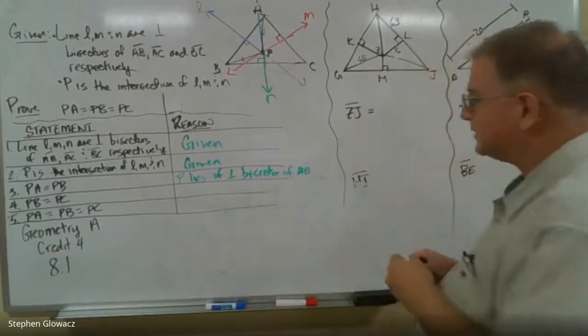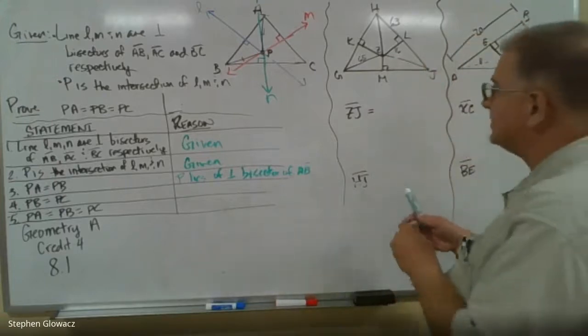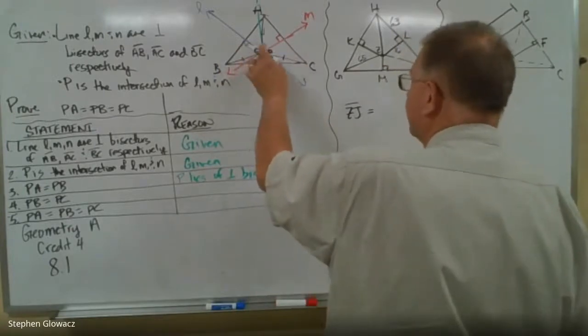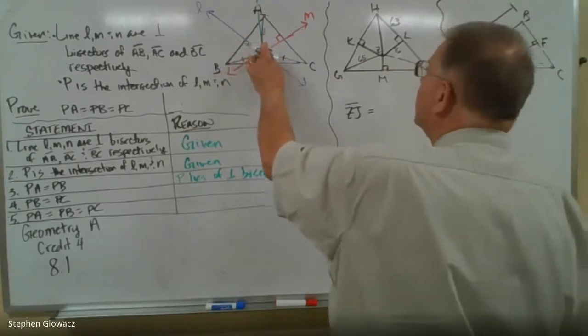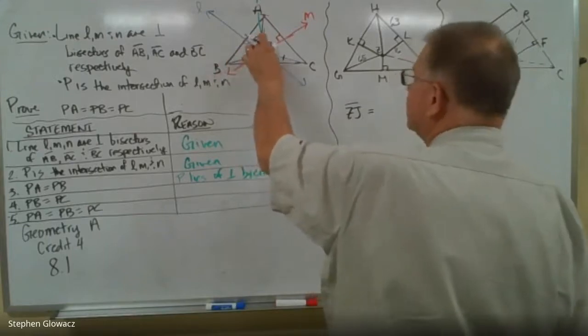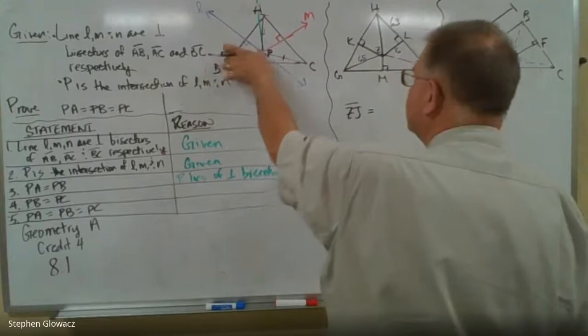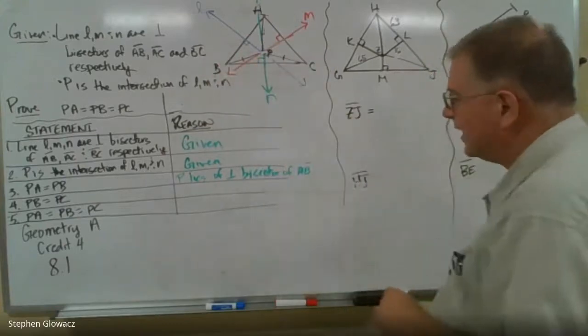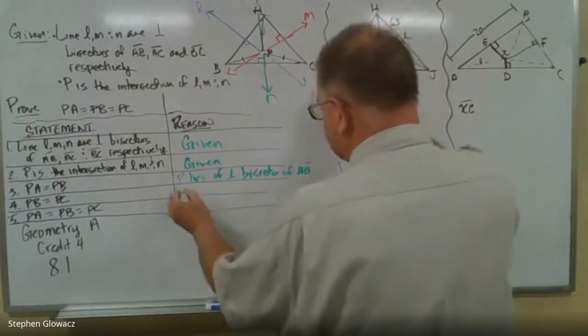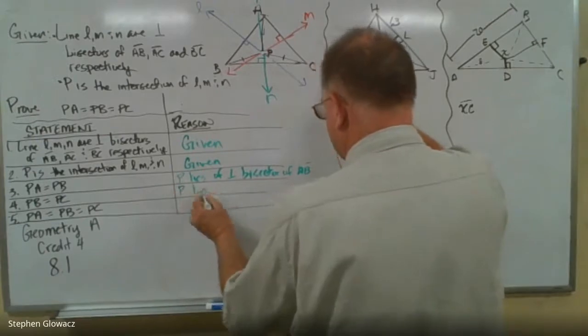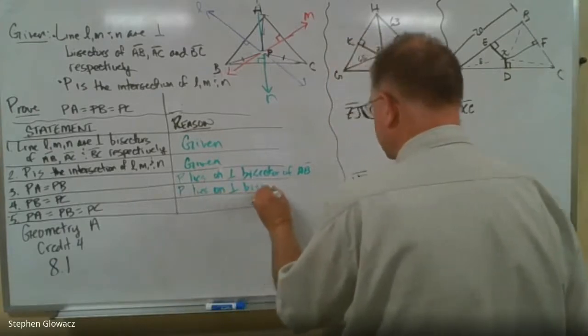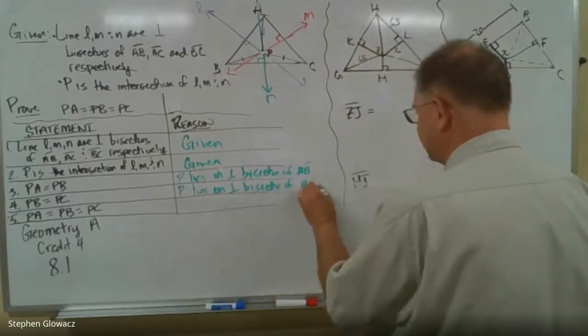We talked about in an earlier video that any point on a bisector is the same distance to the endpoints of the segment that it's bisected. So PA is congruent to PB, and the reason is P lies on the perpendicular bisector of AB. Next, it says PB is congruent to PC. Those segments are congruent because P is on this line here, line N. Again, same reason, any point on the bisector is going to be the same distance to the endpoints, in this case B and C. So P lies on the perpendicular bisector of AC.